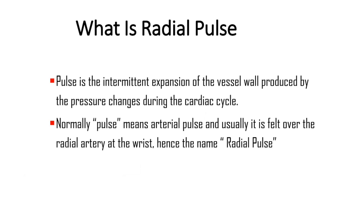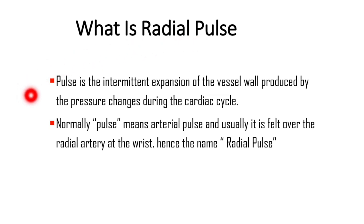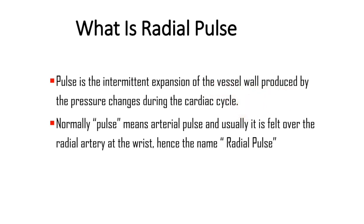What is radial pulse? Before knowing what is radial pulse, first let us know what is pulse. Pulse is the intermittent expansion of the arterial wall produced by the pressure changes due to the cardiac cycle. Normally, pulse means arterial pulse. Usually it is felt over the radial artery at the wrist. Hence the name radial pulse.